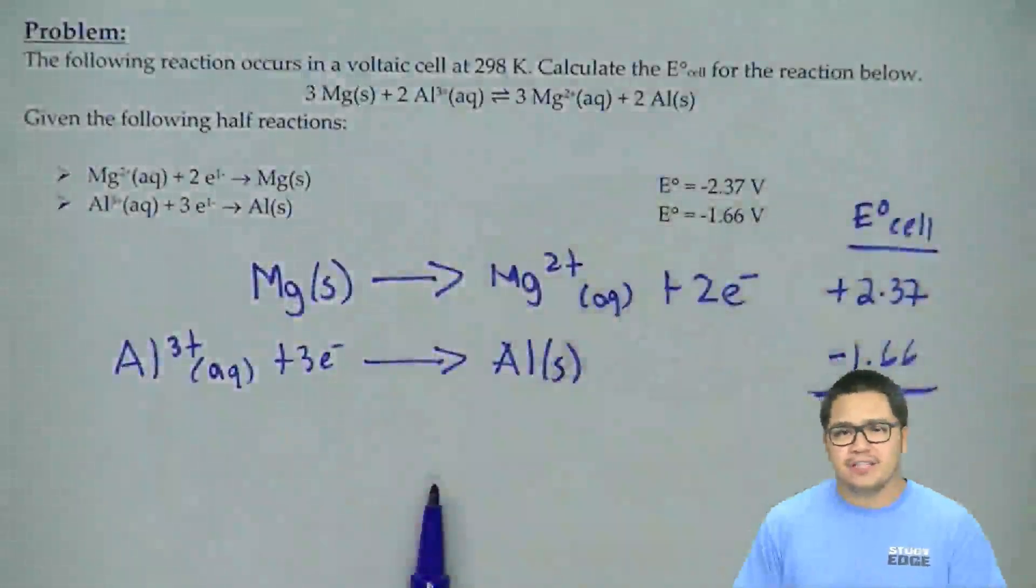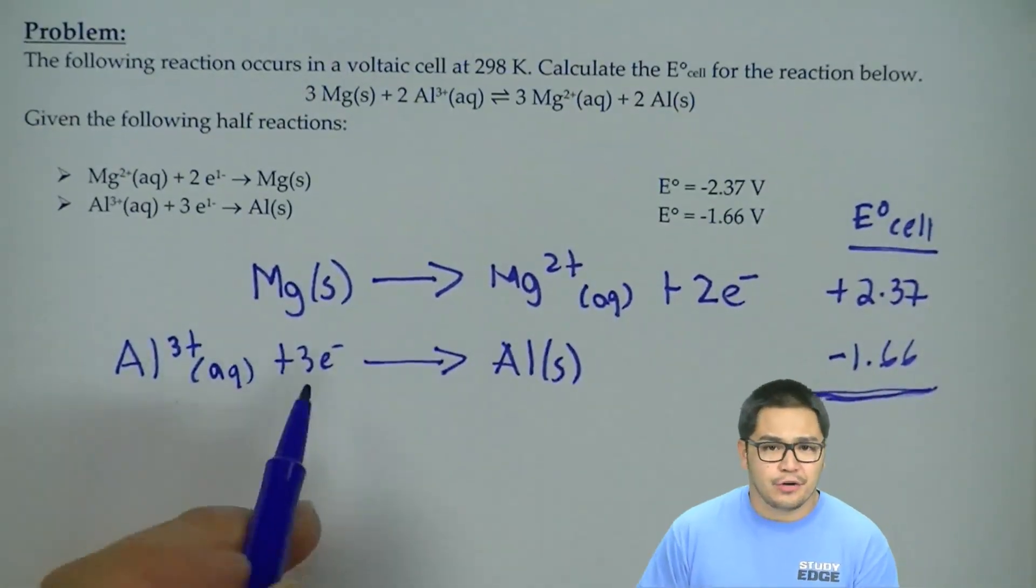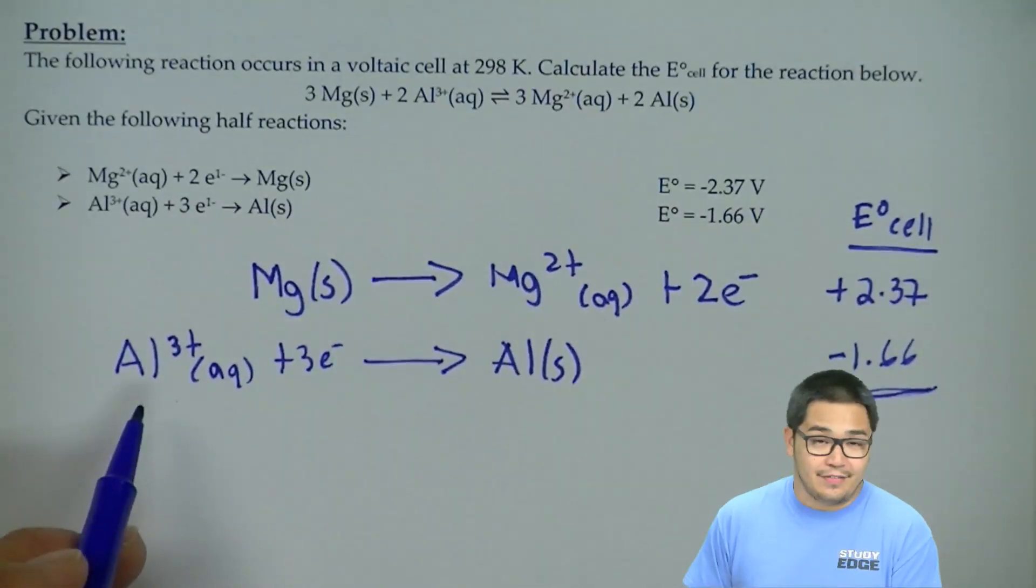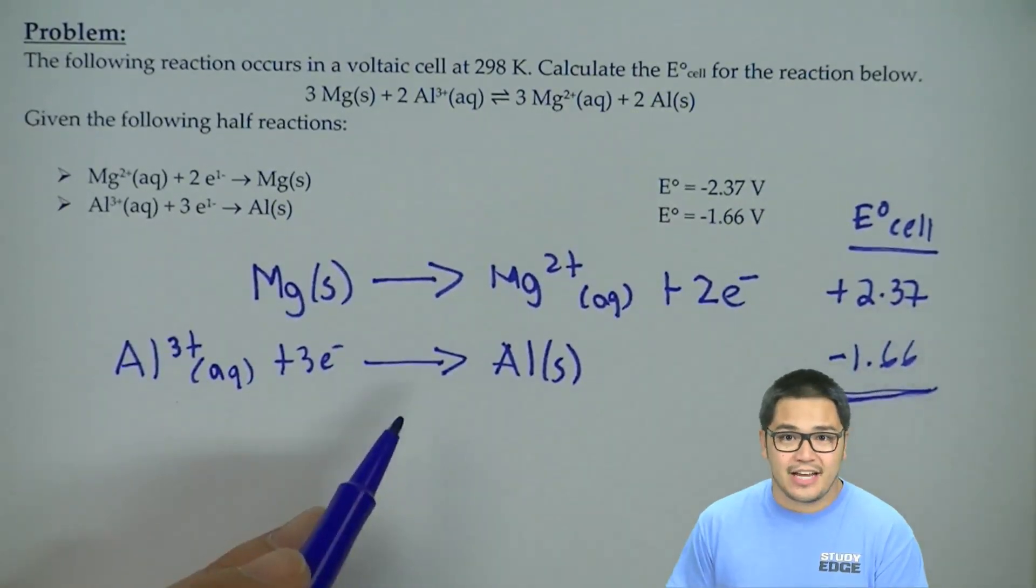We want to determine which one's losing electrons, which one's gaining electrons. So when we've written out these half reactions already, we're going to notice the magnesium is losing, so that's our anode. And the aluminum is gaining electrons, that's our cathode.